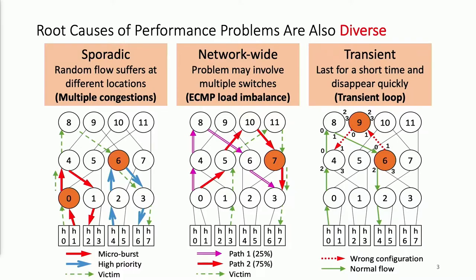To show the problems can be transient, a transient loop may exist for short time, and it may create congestion and may cause packet loss, and this transient loop may disappear very quickly.